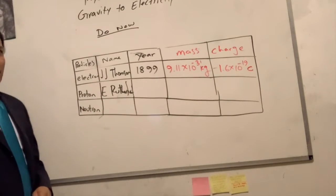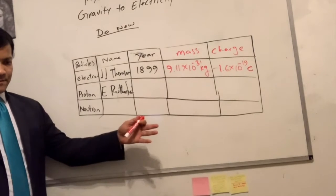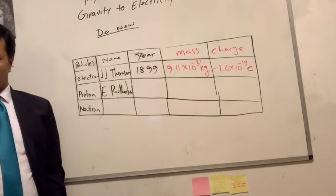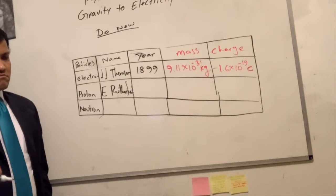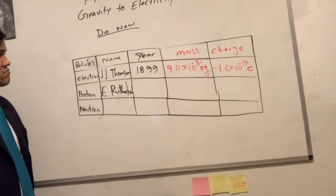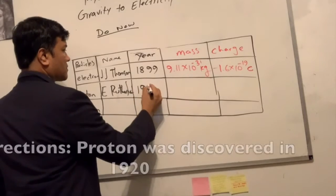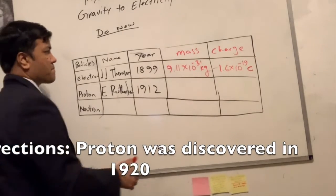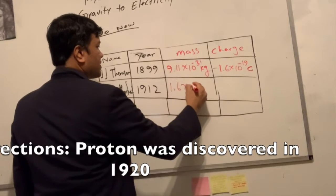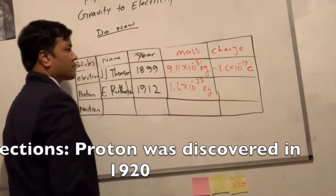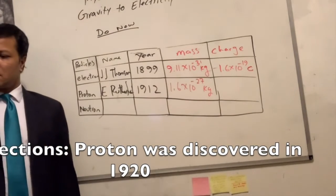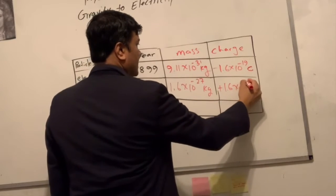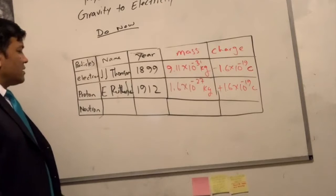What year do you think he discovered it? 1904? Oh, there is an interval of time. Not 1904 exactly. 1903 to 1904? 1905? No, around 1912. So that's 1912. The mass of the proton? 1.6 times 10 raised to negative 27 kilogram. What's the charge? It's just the same as an electron but it's positive. Very good. 1.6 times 10 raised to negative 19 Coulomb.